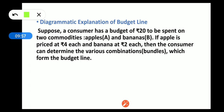Consider an example: a consumer has 20 rupees to be spent on two commodities — apples (A) and bananas (B). If apples are priced at 4 rupees each and bananas at 2 rupees each, the consumer can determine various combinations or bundles which form the budget line. We need to find what combinations of apples and bananas can be bought for 20 rupees.